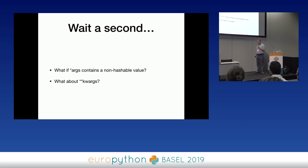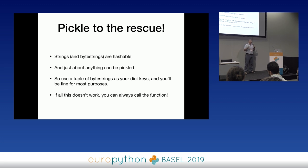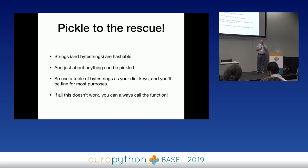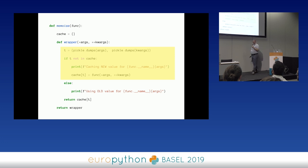What if args has a non-hashable value? And what about kwargs? Pickle to the rescue. I can take args and kwargs and pickle them — pickle is Python's serialization system, it works on just about everything, and gives back a byte string, which is of course hashable. So I take args and kwargs, run pickle.dumps on each, get back a byte string for each, use a tuple of byte strings as my key, check if I've seen it before, run the function if not, and return from cache if yes.